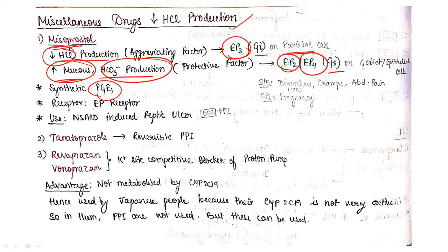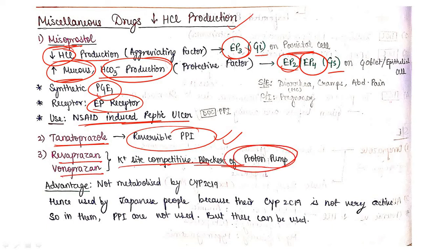Next is tenatoprazole. This is a reversible PPI. Remember this: this is the reversible PPI. All other PPIs were irreversible. This tenatoprazole will be reversible PPI. Then revaprazan and vonoprazan are K+ site competitive blockers of proton pump. They are K+ site competitive blockers of proton pump. Advantage: they are not metabolized by CYP2C19, hence used by Japanese people because their CYP2C19 is not very active, so in them PPIs are not used.